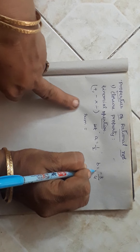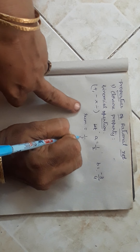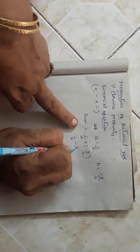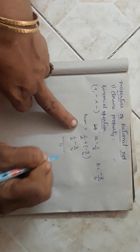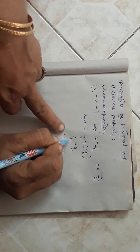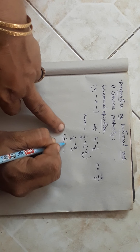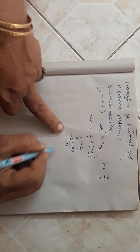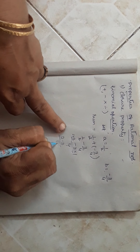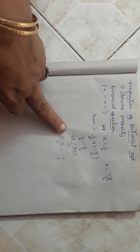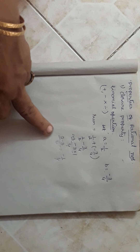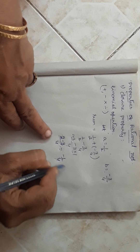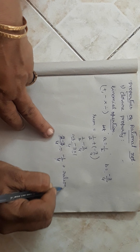Let a equal 1 by 2 and b equal minus 3 by 4. Let us find out the sum. A is a rational number, b is another rational number. Now 1 by 2 plus minus 3 by 4 equals 1 by 2 minus 3 by 4. Taking the LCM of 4: 1 into 2 is 2, minus 3, which gives us 2 minus 3 by 4, equal to minus 1 by 4.